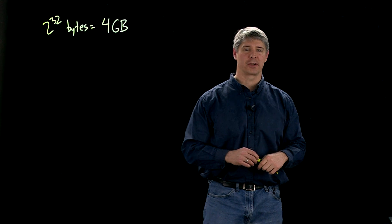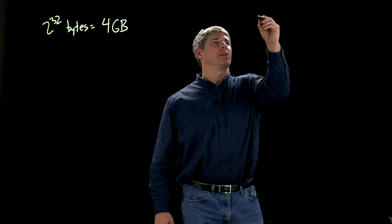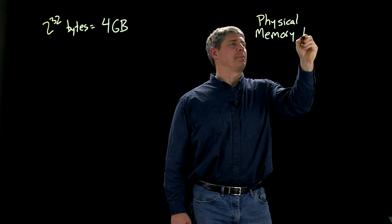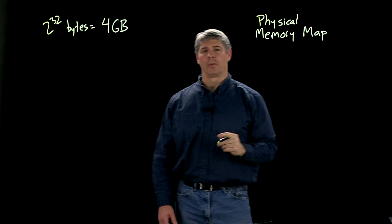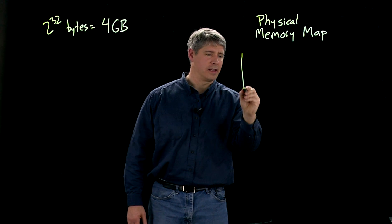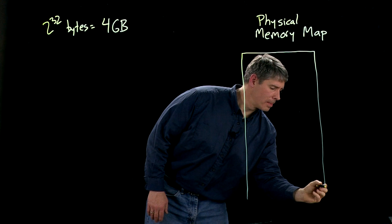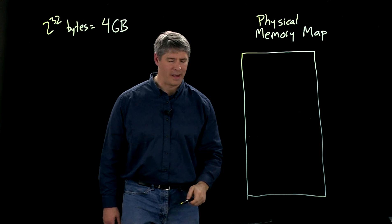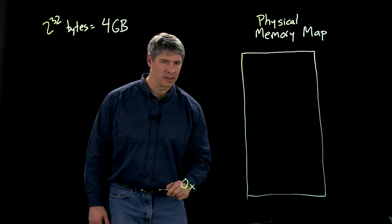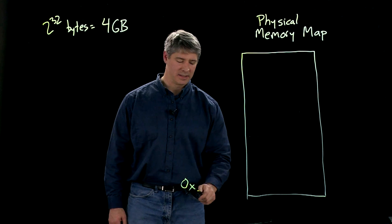What we want to do now is look at the physical memory map of the PIC32 to see which addresses are valid and what they mean. We know it goes from 0 to 4 gigabytes, and I'm going to write that as a vertical stack of bytes. Down at the bottom, I have address 0, written in hexadecimal as 0x. Since each hex character represents 4 bits, I'm going to need 8 zeros here.